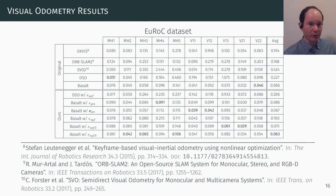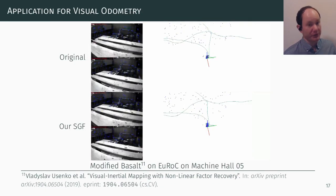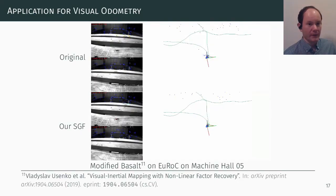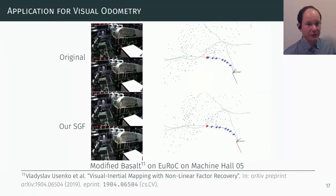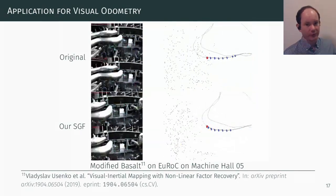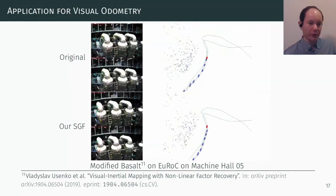Furthermore, we extended the optical flow front end of the visual inertial odometry framework Basalt with our measure. As a result, the estimated trajectory followed the ground truth more closely.